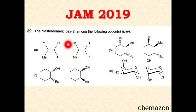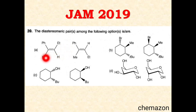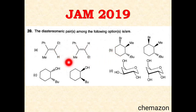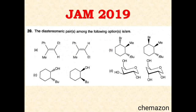In multiple select type questions you can have more than one correct answer. So in this question you have to identify out of the four options how many pairs of molecules are diastereomers. Let us see the solution.